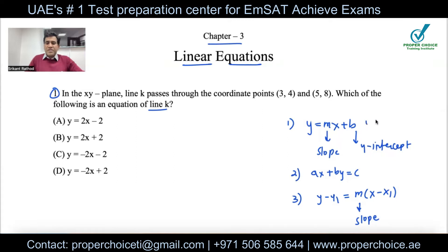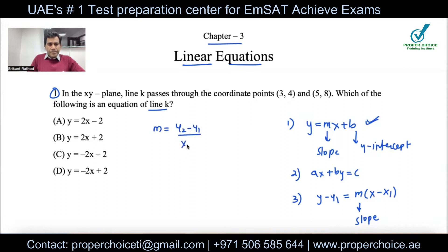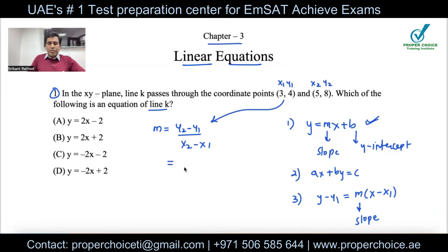The options ask us to represent the equation in the first form: y = mx + b. Whenever a question asks you to find or represent a linear equation, you need to do two things: find the slope and find the y-intercept. To find the slope using coordinate points, we know slope is rise over run, which is (y₂ − y₁) / (x₂ − x₁). You can name either point as (x₁, y₁); just don't mix up x and y values.